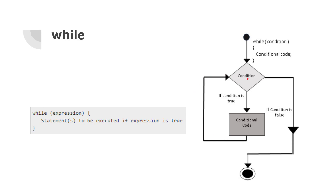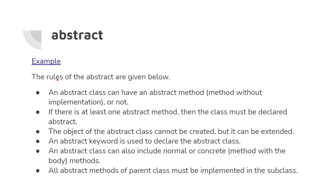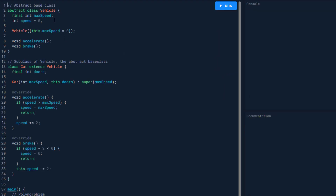Now let's go through keywords related to class. 'Abstract': an abstract class can have abstract methods — methods without implementation. If there is at least one abstract method the class must be declared abstract. An object of the abstract class cannot be created; it can only be extended. Let's go through an example.